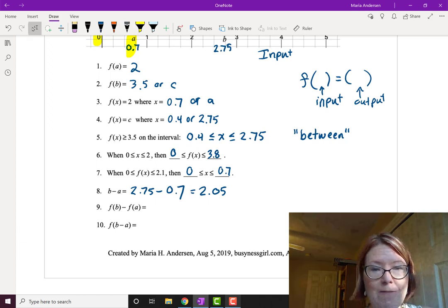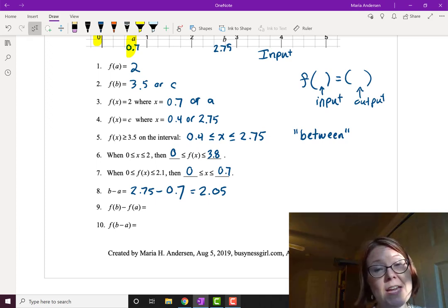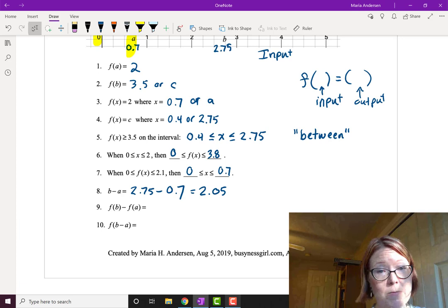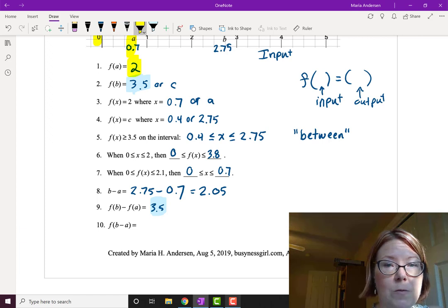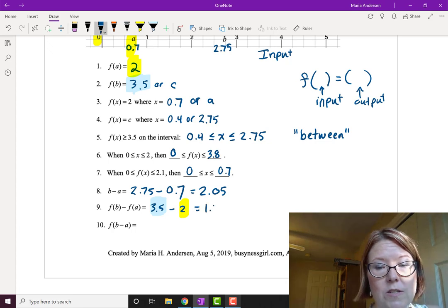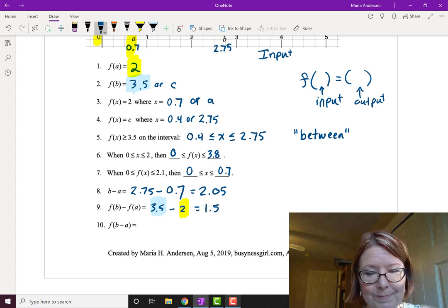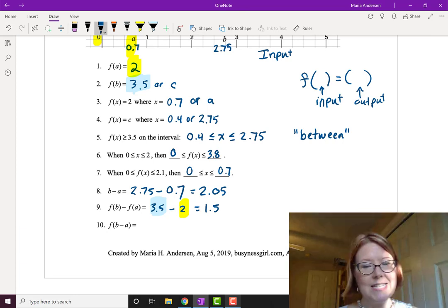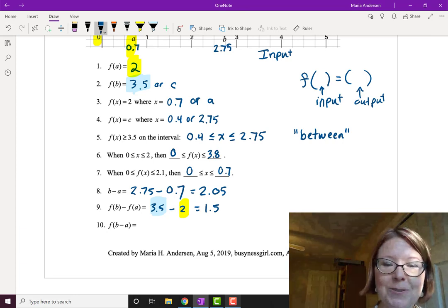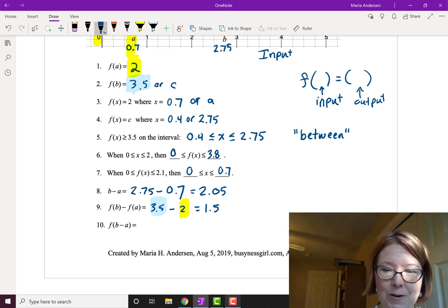f of b minus f of a. Those are the output values. We actually wrote those in the first two problems. So f of b was 3.5 and f of a was 2. So we are going to do 3.5 minus 2, which is 1.5. So number eight was the difference in x values, b minus a. Number nine was the difference in output values, 3.5 minus 2.